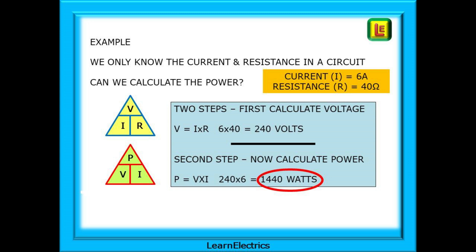If we only know the current and resistance in a circuit, then how can we calculate the power? We have to do this in two steps. First, calculate the voltage using Ohm's Law, and then the second step, calculate the power using the newly found voltage and the current. Two steps, two calculations, if we use the triangles.